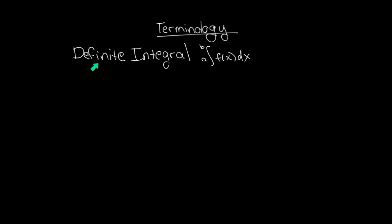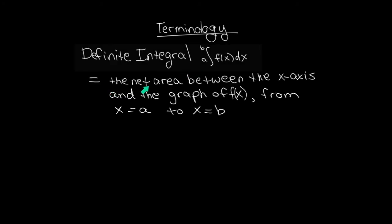Let's begin with some terminology. Today we're going to be talking about definite integrals. Here are the symbols that we use for definite integrals. You can see the familiar squiggly line. What's different about this notation is that here we have an x value — x equals a and x equals b — on the bottom and the top of the integral sign. The meaning of these symbols is the net area between the x-axis and the graph of the function f of x from x equals a to x equals b.